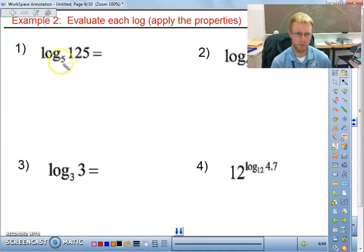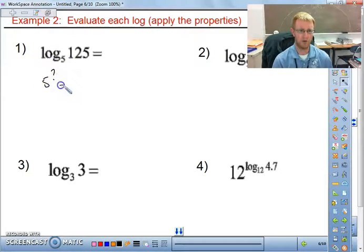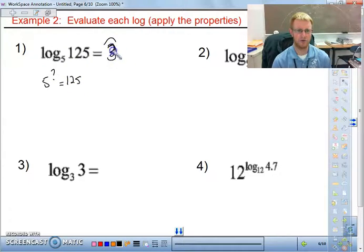Okay, so using some of these properties, again, we don't always have to use our properties. We're just going to run through these really quickly. Basically, 5 to what power equals 125? Pretty easy. Sorry, that's not 2. It should be 3.